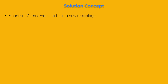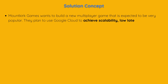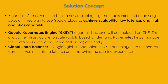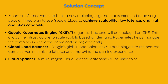Mount Kirk Games wants to achieve scalability, low latency, and high analytics capability using Google Cloud. The game's back-end will be deployed on GKE, allowing the infrastructure to scale rapidly based on demand. Kubernetes manages the containers where the game code runs efficiently. Google's global load balancer will route players to the nearest game server, minimising latency and improving the gaming experience. A multi-region Cloud Spanner database will store and sync the global leaderboard data, ensuring it is up-to-date and available in real-time for players around the world.